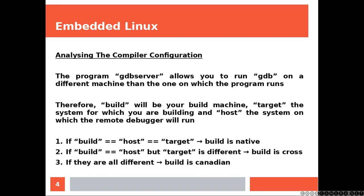The program GDB server allows you to run GDB on a different machine than the one on which the program runs. Therefore, build will be your build machine, target the system for which you are building, and host the system on which the remote debugger will run. If build equals host equals target, the build is native. If build equals host but target is different, the build is cross. If they are all different, the build is Canadian.